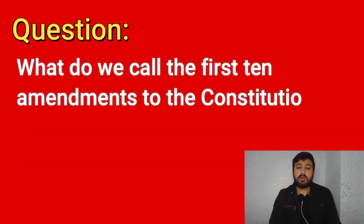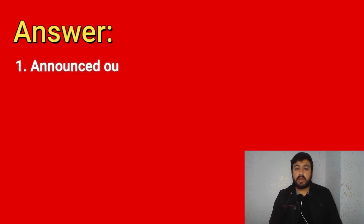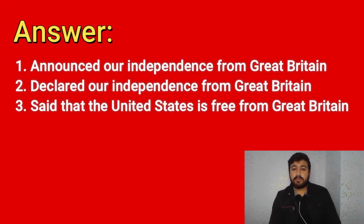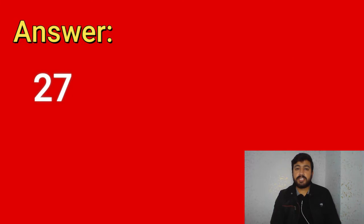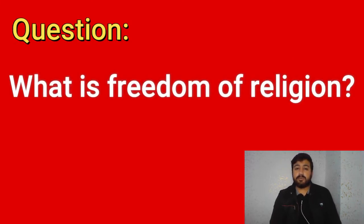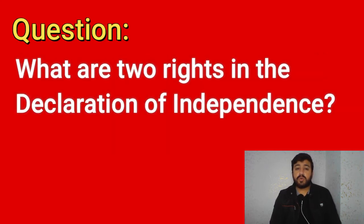What is one right or freedom from the First Amendment? Speech, religion, assembly, press, or petition the government. What do we call the first 10 amendments to the Constitution? The Bill of Rights. What did the Declaration of Independence do? It announced our independence from Great Britain, declared our independence from Great Britain, and said that the United States is free from Great Britain. How many amendments does the Constitution have? 27.